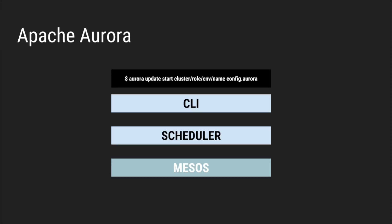This is what Aurora looks like. There's a command-line client that almost all user interactions go through. There's a scheduler that is basically responsible for taking your specification — what you want to run and what shape your instance needs to look like — and the Aurora scheduler negotiates with Mesos to make that happen.